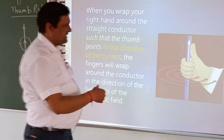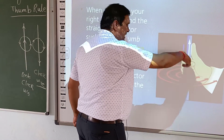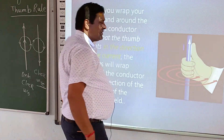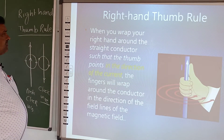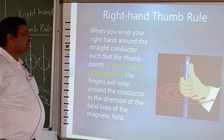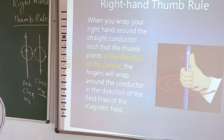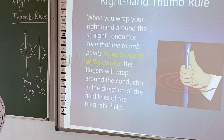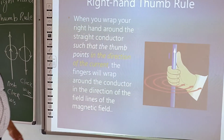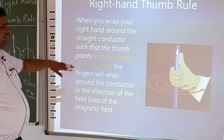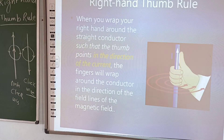When you wrap the right hand around the straight conductor such that the thumb points in the direction of the current, the fingers will be wrapped around the conductor in the direction of the field lines of the magnetic field. So this is the right hand thumb rule. Now we can also do this with Maxwell's screw rule.